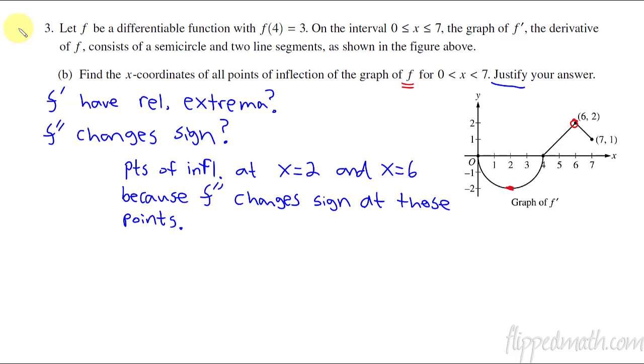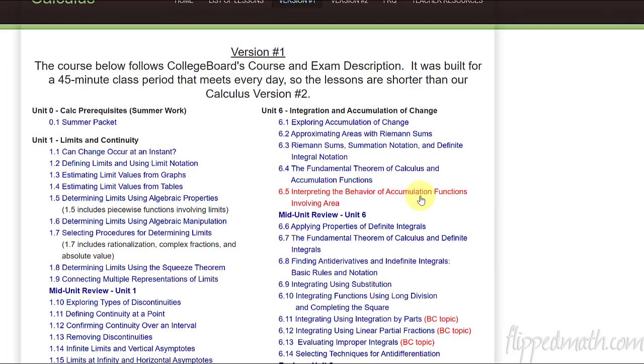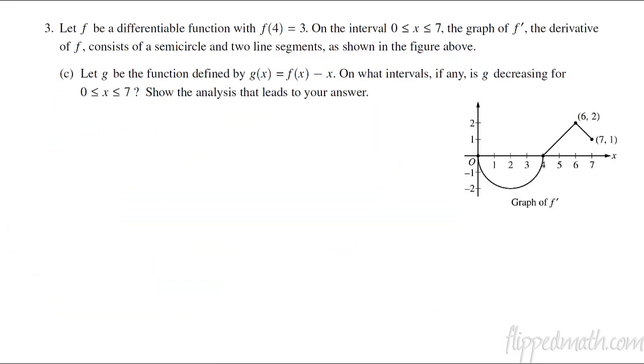Now, what is the lesson you could look at to get better at this? Well, 5.6, 5.6 is the lesson on points of inflection, of finding points of inflection. And then 6.5 is the lesson on the behavior of accumulation functions. So this behavior of accumulation functions is the tricky one. All right, let's go on to part c.